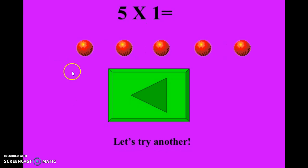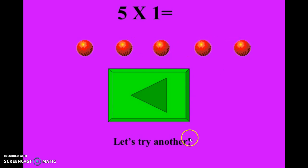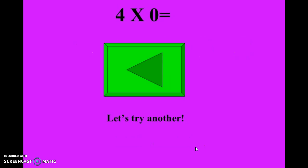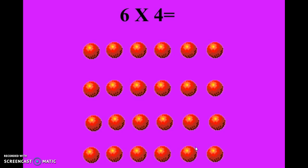Here's another: five times one, so our answer should equal five — one, two, three, four, five. When you have four times zero, or any number times zero, your answer is always going to be zero. Here we have six oranges and four sets, so six times four — take a moment to figure that out. Your answer should be twenty-four.